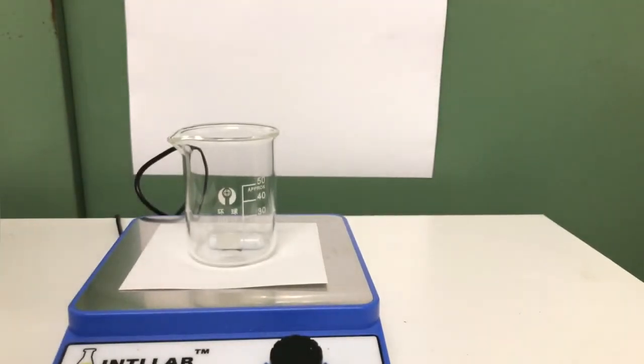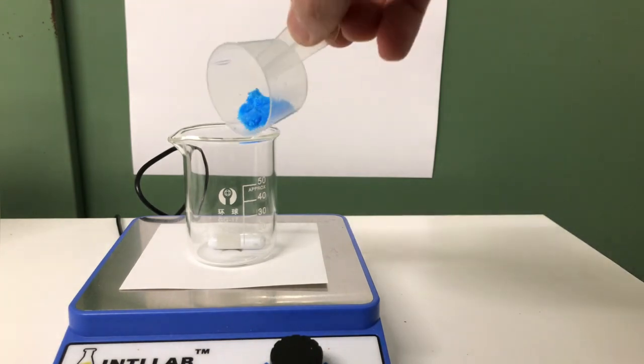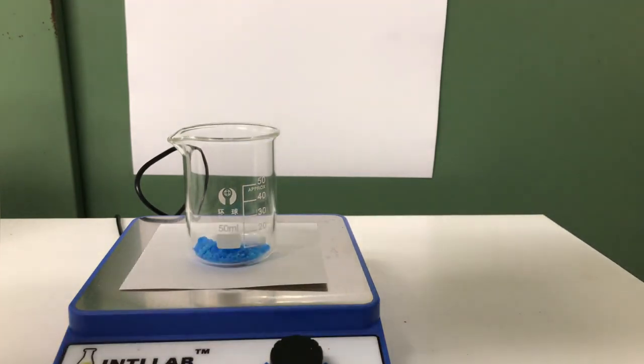Start by adding the copper sulfate into your beaker and afterwards dissolving it in some distilled water.